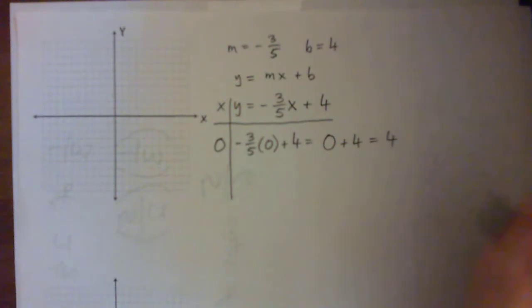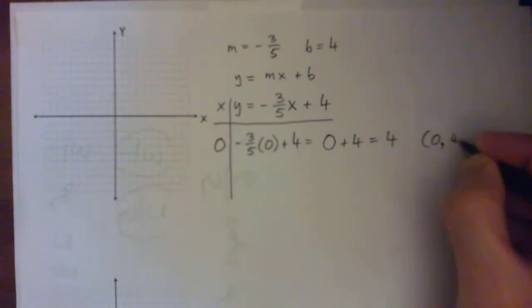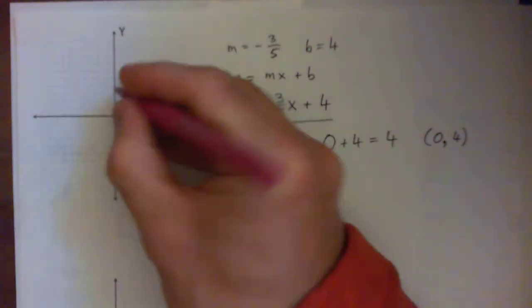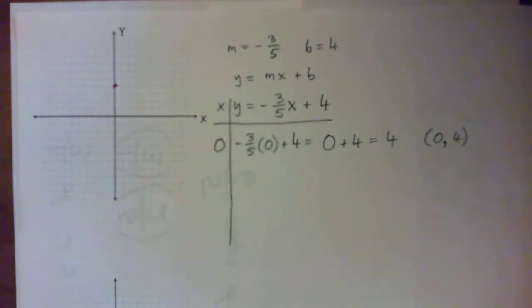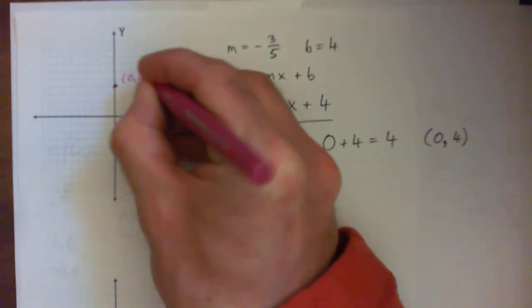We can make a point there. So X is 0, Y is 4. Now let's graph that point on the grid. You would go up to the 4 on the Y axis. X is 0, Y is 4, right there.